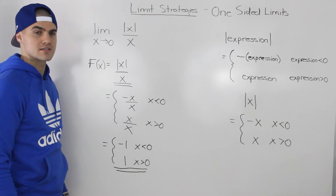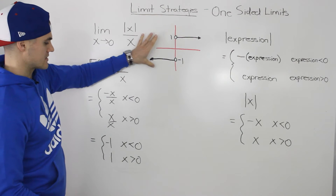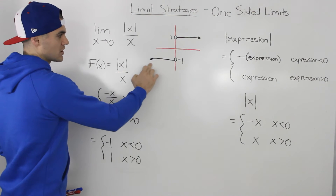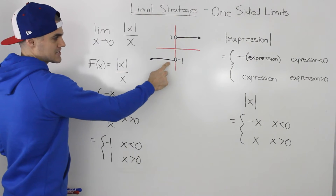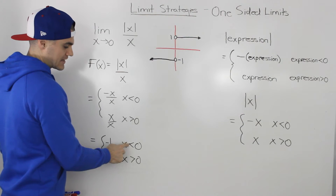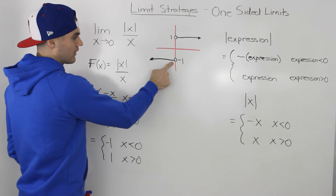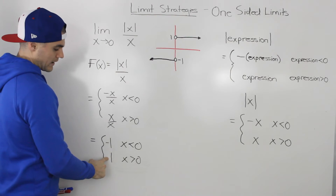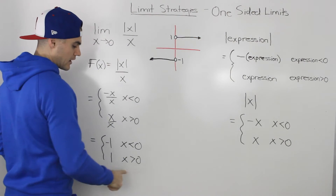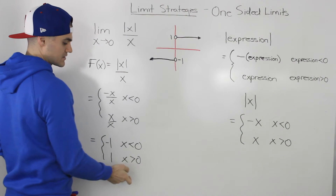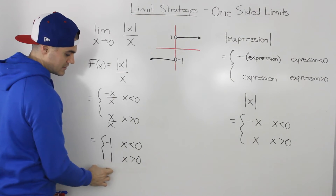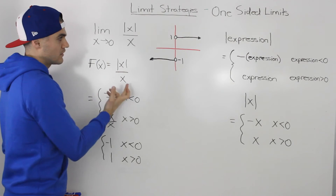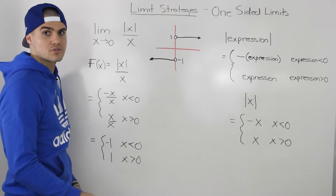We can now graph this piecewise function. The y value equals negative one — a horizontal line at y = -1 — when x is less than zero. Notice it's less than zero, not less than or equal to zero, so there's a hole at zero. To the left of that it's just a horizontal line. Then y equals positive one — another horizontal line — when x is greater than zero, also with a hole at zero. There is no y value at x = 0 because the original function is undefined there.